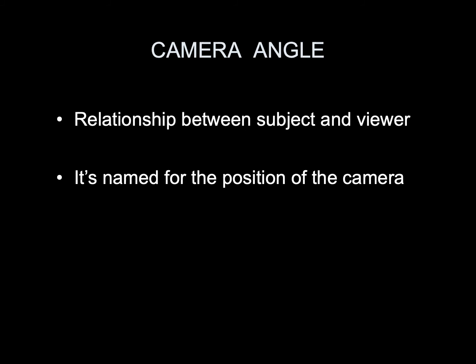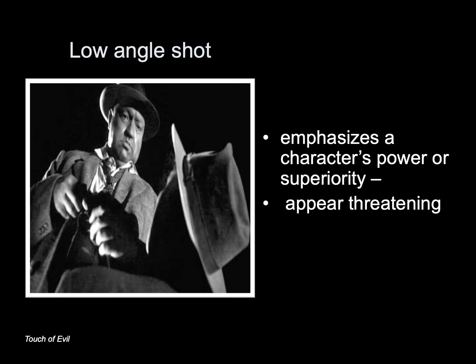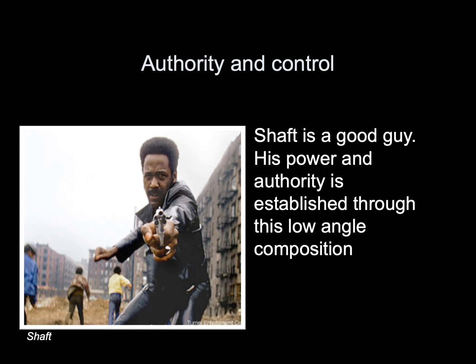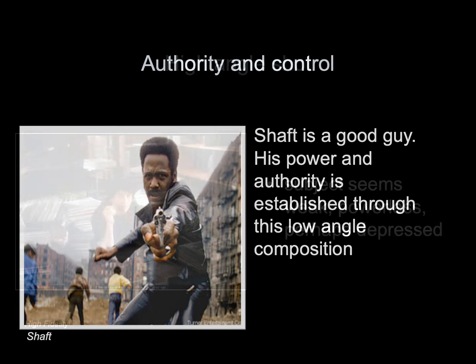Camera angle — the relationship between the subject and the viewer. A camera angle is named for the position of the camera. Low angle shot: emphasizes a character's power and superiority and can make them appear threatening. For example, Leatherface is clearly a scary character, and the low-angle composition helps establish his dominance. Shaft is a good character whose authority and control are established through a low-angle composition.